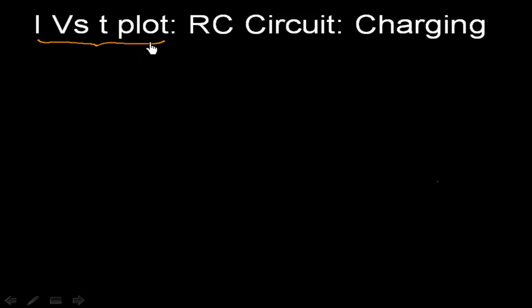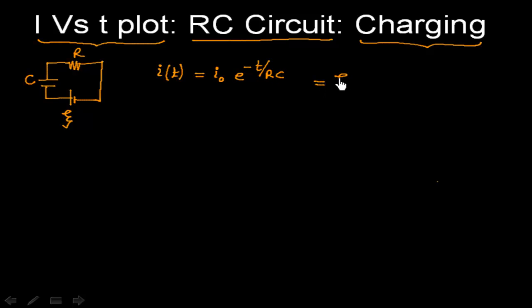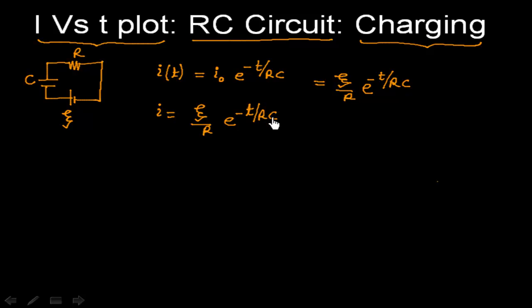Let us look at the I versus T plot for RC circuits in the case of charging. We have a RC circuit containing a resistor and a capacitor in series with a battery of EMF ξ. The current as a function of time is given by I = I₀ · e^(−t/RC), where I₀ = ξ/R, so current I = (ξ/R) · e^(−t/RC).